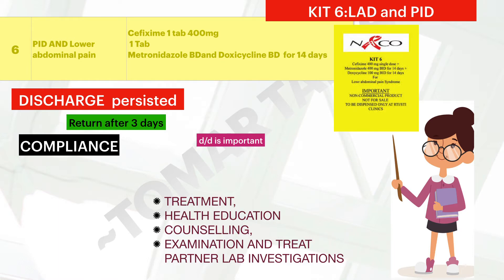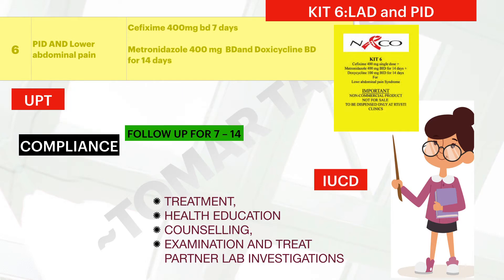For examination, general examination regarding temperature, pulse, and blood pressure along with genital examination is important. Lab investigation, although the kit is given on the basis of signs and symptoms as the syndromic approach suggests, all cases of lower abdominal pain and suspected PID should undergo a urine pregnancy test (UPT) to rule out ectopic pregnancy, which is a potential differential diagnosis of PID.